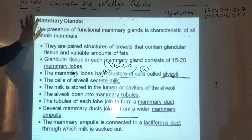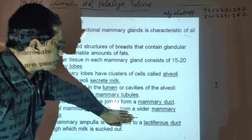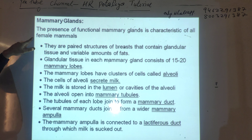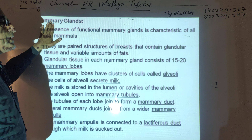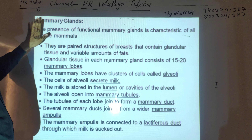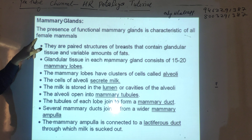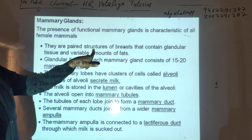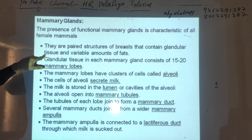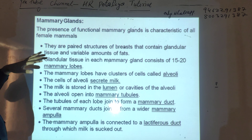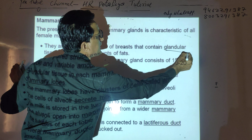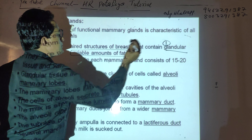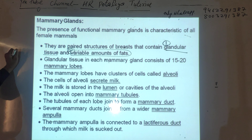Now we are discussing the accessory glands — the mammary glands and Bartholin glands. The presence of functional mammary glands is a characteristic of all females. Mammary glands are pear-shaped structures containing glandular tissue and variable amounts of fat. Each mammary gland consists of 15 to 20 mammary lobes.